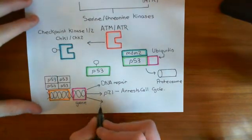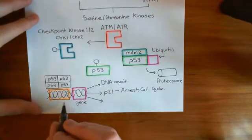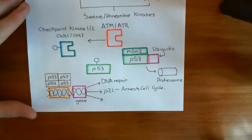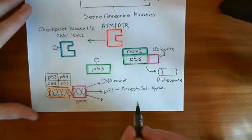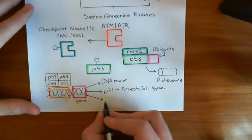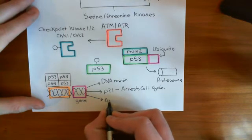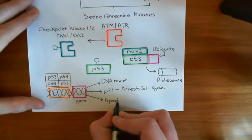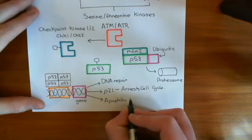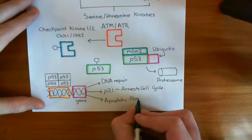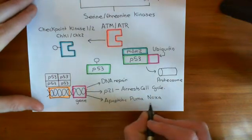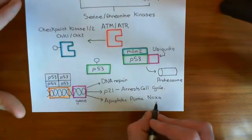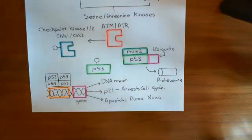If you have very high levels of P53 for a prolonged period of time, that indicates DNA repair mechanisms are not working and the DNA remains damaged. In that case, P53 will transcribe pro-apoptotic proteins — specifically PUMA and NOXA. PUMA and NOXA are two pro-apoptotic proteins which lead to the intrinsic pathway of apoptosis being activated.